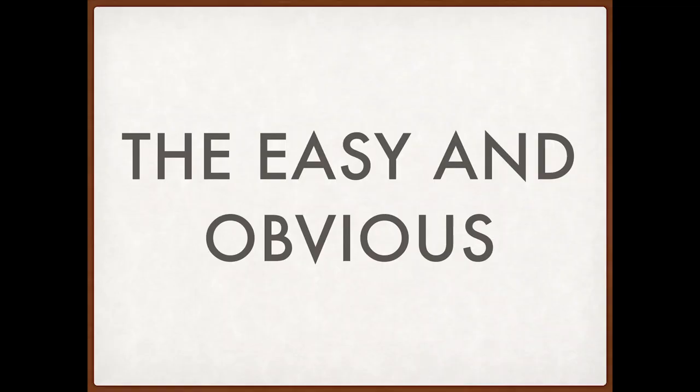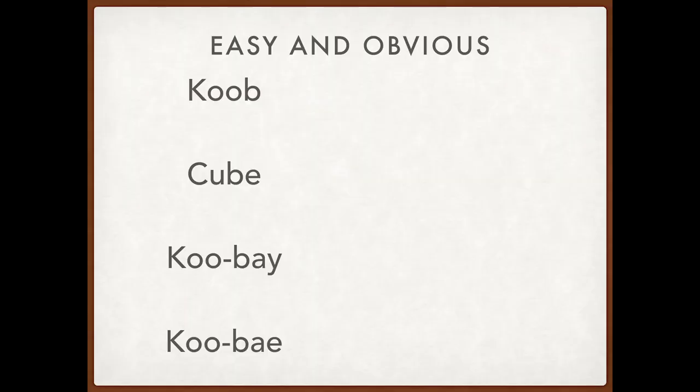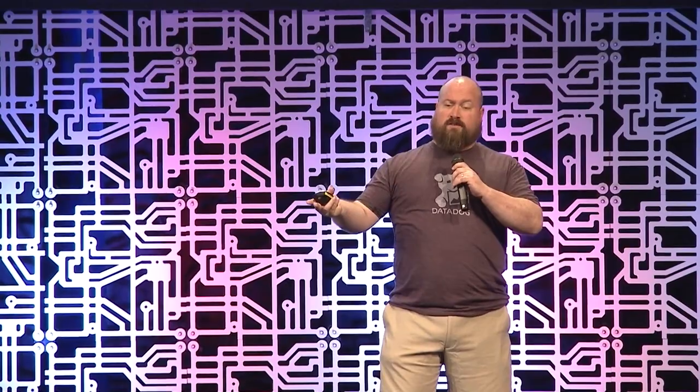So, there are several easy and obvious pronunciations. For the first half, we can start with kube, or cube, or kube, or kube. And if you're under 30, those bottom two sound different. For those of us who are over 30, the last one is the young person's equivalent of cool, babe.